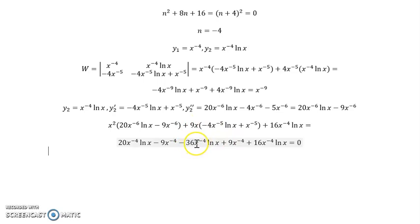9x times this gives me negative 36. x times x to the negative 5 gives me x to the negative 4. I get my 9x here. And then of course this one doesn't do anything.